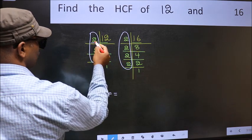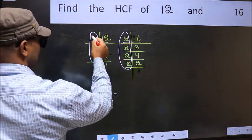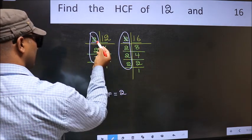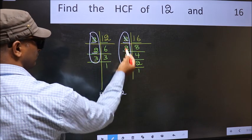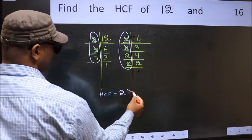Starting with the number 2. Do we have 2 here? Yes. So cut 2 right here. Next number 2. Do we have 2 here? Yes. So cut 2 right here.